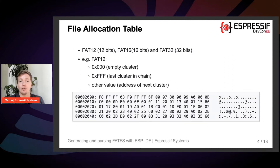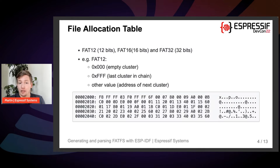The file is allocated as a linked list of clusters with nodes stored in the file allocation table. The linked list node corresponds to the FAT table entry. If the node is final, the entry is the highest possible number for the given bit width — all Fs in hexadecimal, or all ones in binary. All zeros determine free space. Otherwise, the number in the FAT entry refers to the address of the next cluster in the file chain. The clusters contain either file content or references to other files or directories, yielding a tree structure.